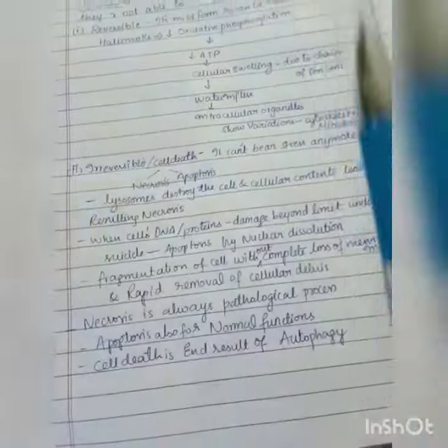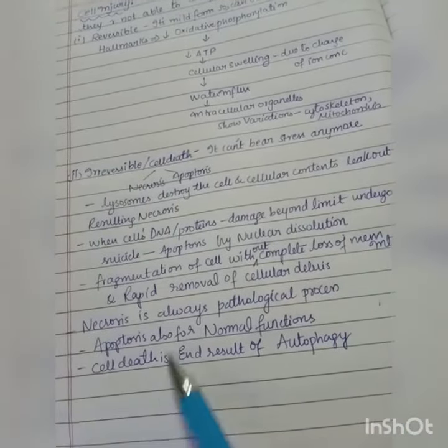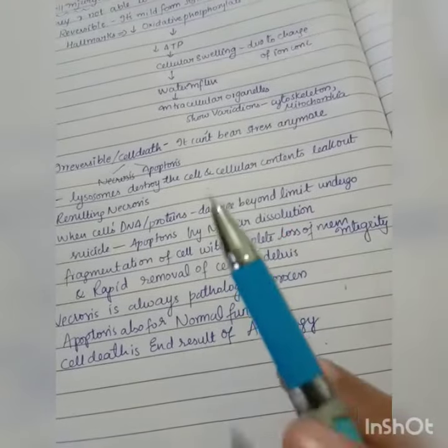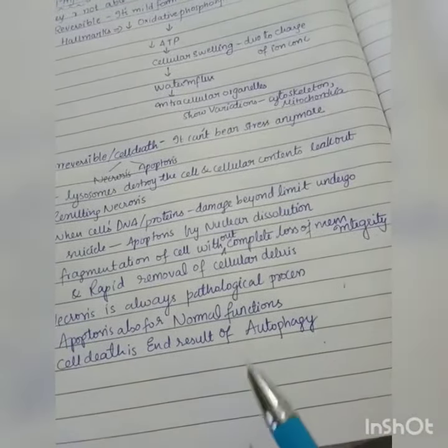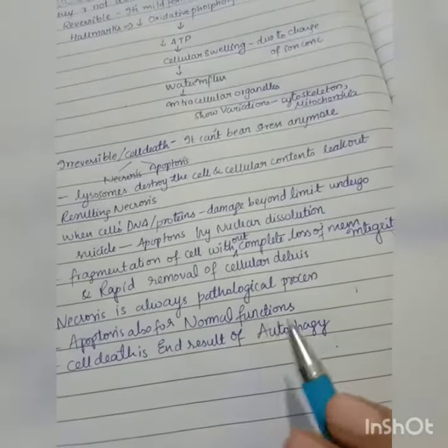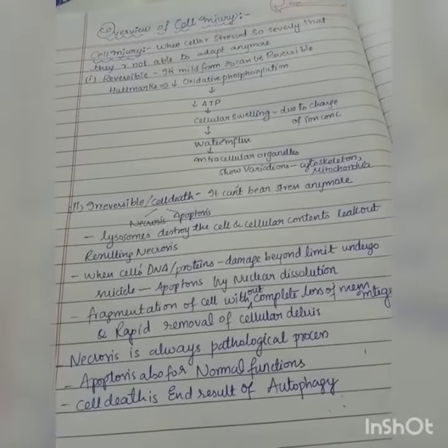Apoptosis is also for normal functions, not especially for cell death, but necrosis is always a pathological process. Cell death is the end result of autophagy. Autophagy is eating of one's own cell. Whenever in starvation, as all nutrients are decreased, our cell eats our own cell. This is the overview of cell injury.